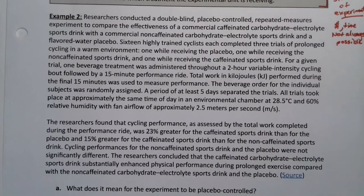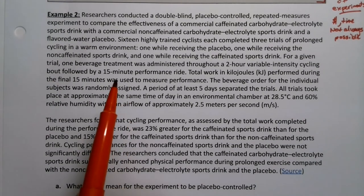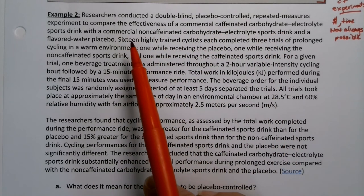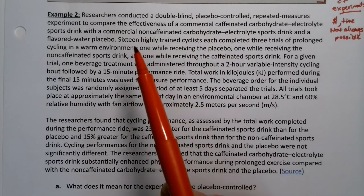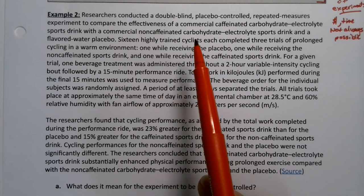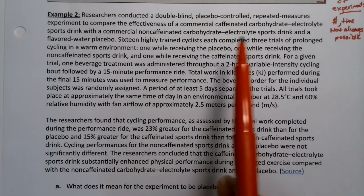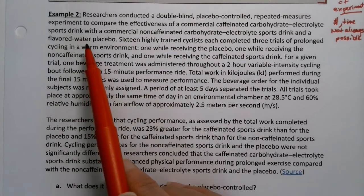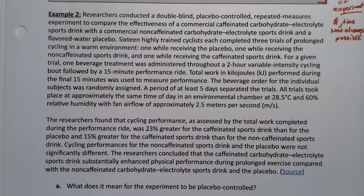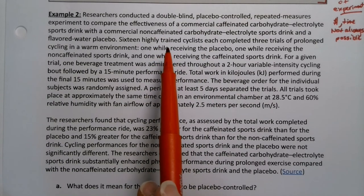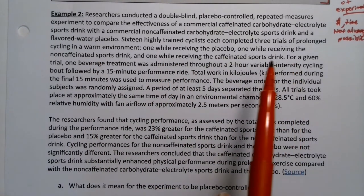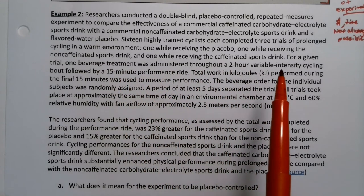Here's an example. Researchers conducted a double blind, placebo-controlled, repeated measures experiment to compare the effectiveness of a commercial caffeinated carbohydrate electrolyte sports drink with a commercial non-caffeinated carbohydrate electrolyte sports drink, and a flavored-water placebo. Sixteen highly trained cyclists each completed three trials of prolonged cycling in a warm environment — that's what 'repeated measures' means, because they're having them do it more than once. They did it once while receiving the placebo, once while receiving the non-caffeinated sports drink, and once while receiving the caffeinated sports drink.